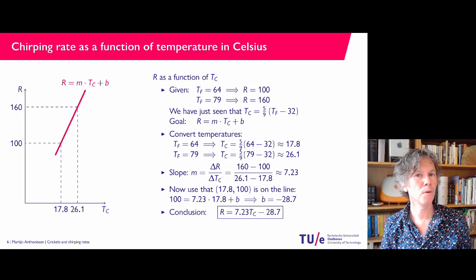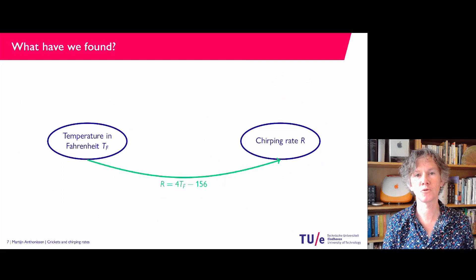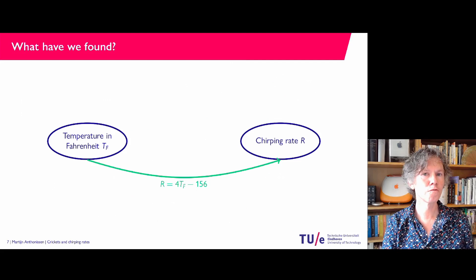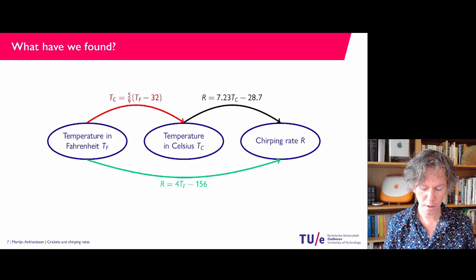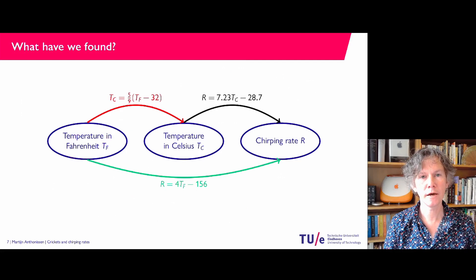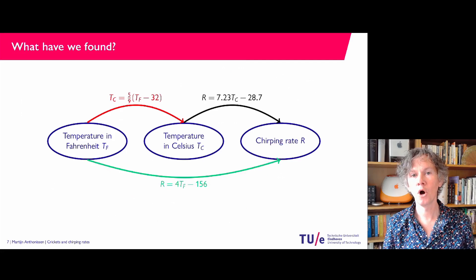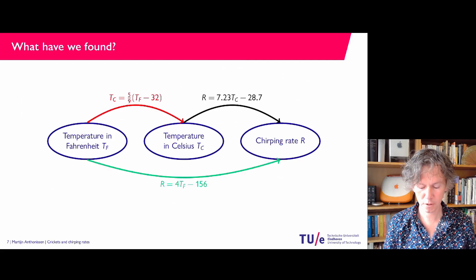This concludes the introductory example, but let's consider what we have found. The original question was: given a temperature in Fahrenheit, what is the corresponding chirping rate? We found R equals 4·Tf minus 156. We also converted temperatures to Celsius and redid the exercise. So we have temperature in Celsius, a relation between Fahrenheit and Celsius temperatures, and the chirping rate as a function of Celsius temperature. If you have a temperature in Fahrenheit and want the chirping rate, you could go directly via the green arrow, or do it in two steps: first convert to Celsius via the red arrow, then find the chirping rate via the black relation.